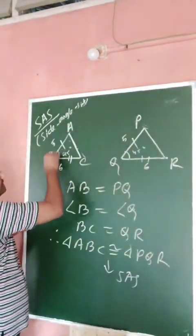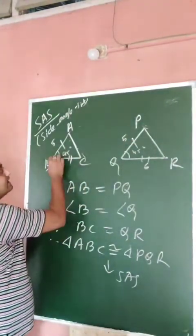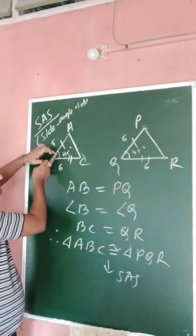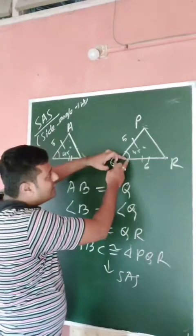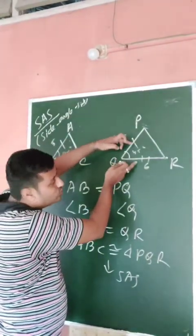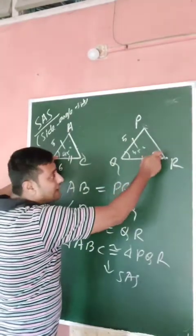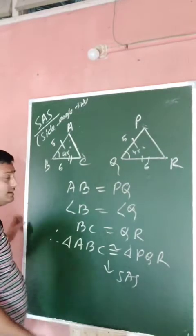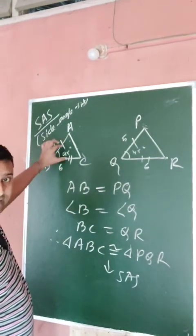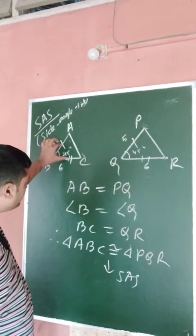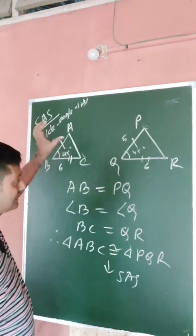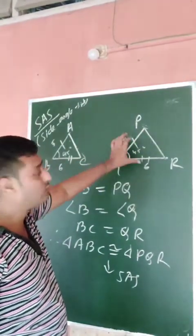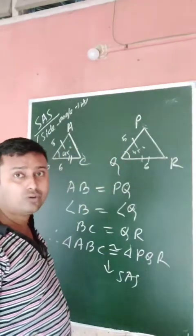So corresponding sides: AB corresponds to PQ, BC corresponds to QR. And the angle in between those two sides — angle B equals angle Q, which is the included angle. If angle B were equal to angle R instead, you could not apply SAS.